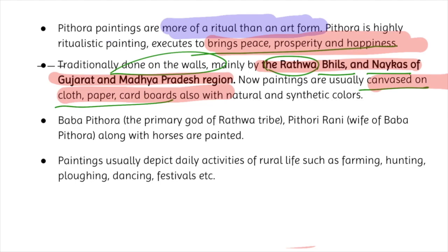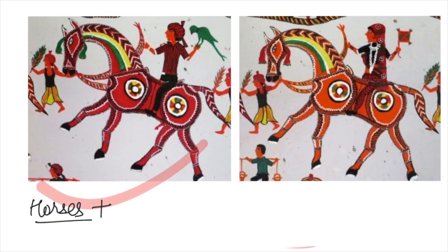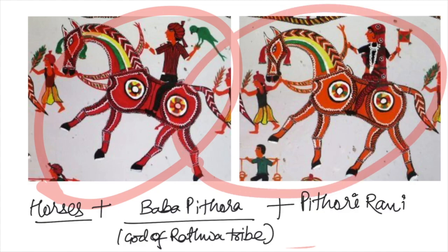UPSC usually has the tendency to ask questions on this topic. In Pithura paintings, you will find the depiction of horses along with the primary god of the Rathwa tribe — Baba Pithura — and his wife Pithori Rani. They usually depict daily activities of rural life such as farming, hunting, dancing, and festivals.